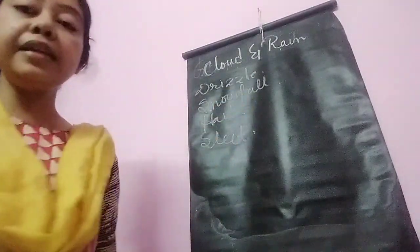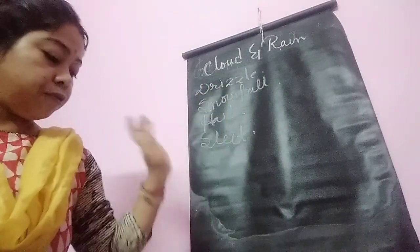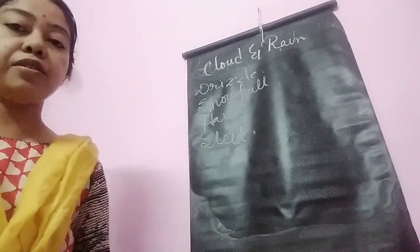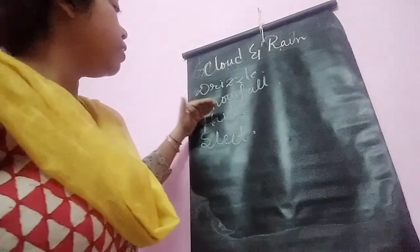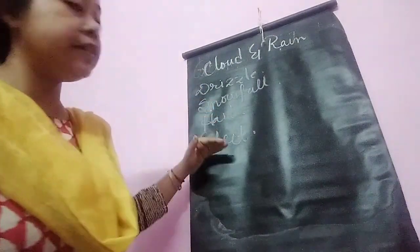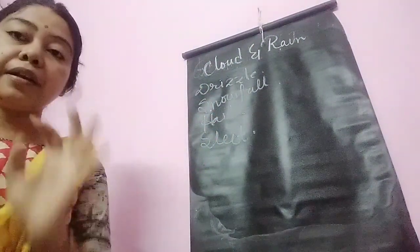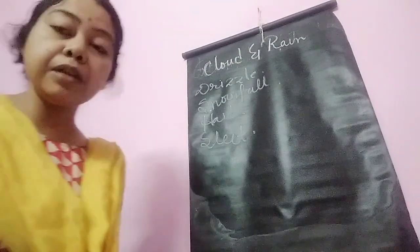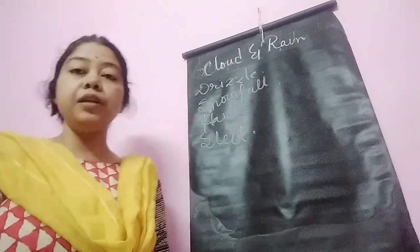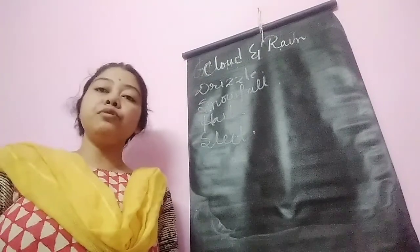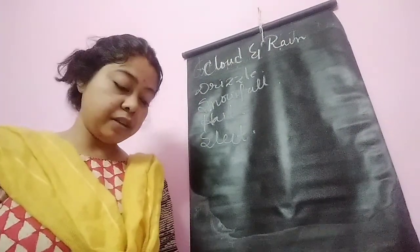So these four definitions — drizzle, snowfall, hail, and sleet — you have to read properly. Whatever I am marking, you should read that part. No diagram is needed, only the definition part.